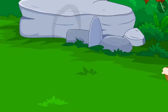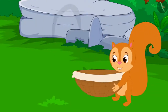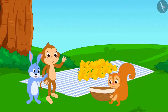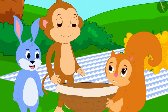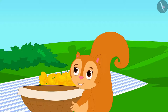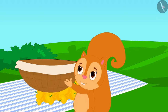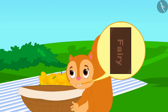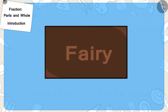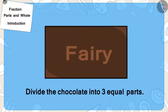Look, Chanda is passing by. She also has an empty basket. Babban and Bunny asked for her basket and told her the entire story. Chanda told them that she could give them her basket, but she wanted an equal share of the chocolate. So now they have to divide the chocolate into three equal parts.